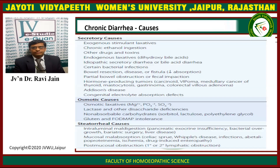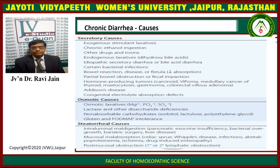This is a table of different causes of chronic diarrhea. The secretory causes include exogenous agents — chronic ethanol ingestion, other drugs and toxins, endogenous agents such as hydroxy bile acids. There can be idiopathic secretory diarrhea and bile acid diarrhea. Certain bacterial infections can cause bowel resection disease, decreased absorption, partial bowel obstruction, or fecal impaction. There can be hormone-producing tumors like carcinoid, VIPoma, medullary cancer, or Zollinger-Ellison disease, as well as congenital electrolyte absorption defects.